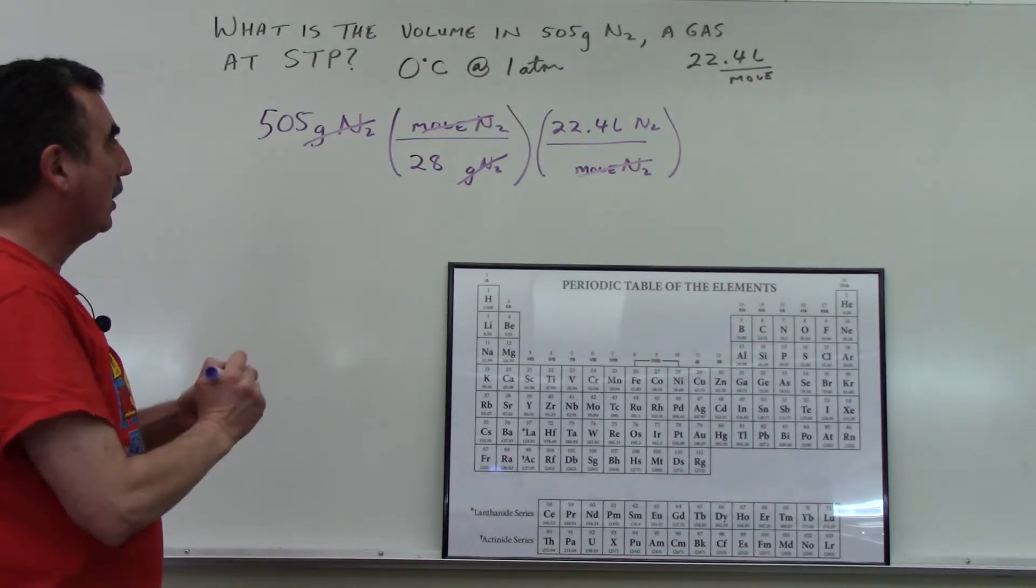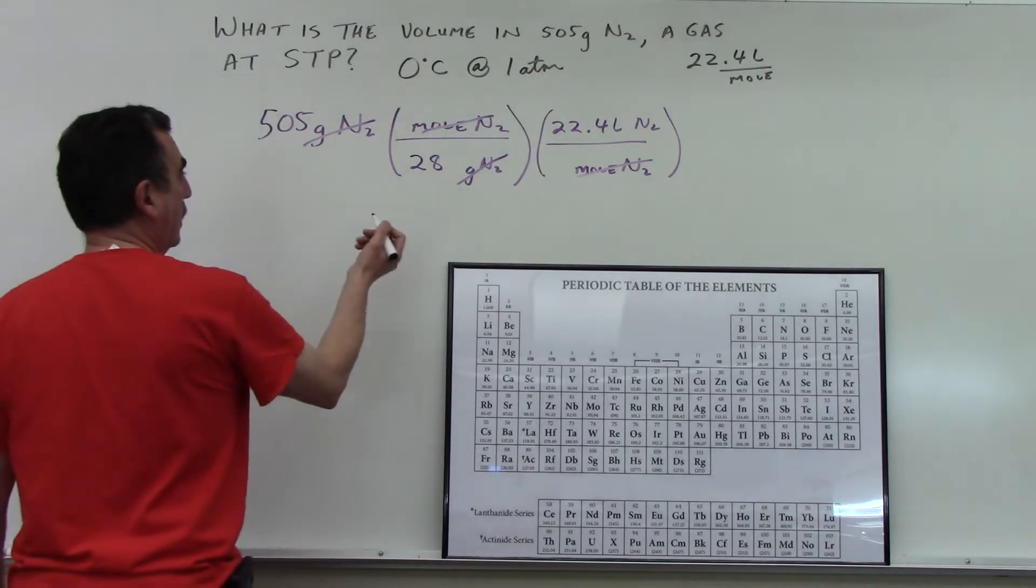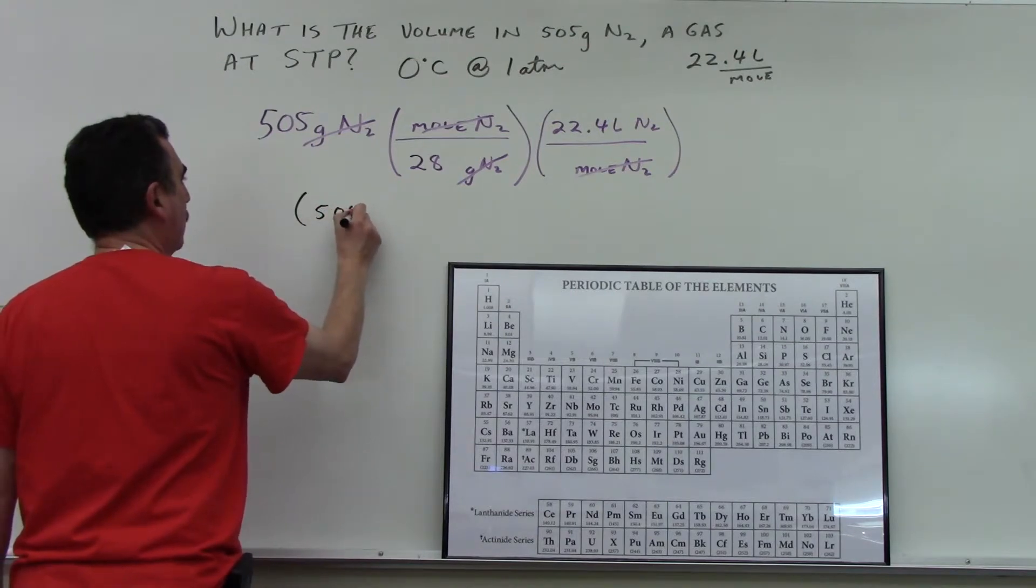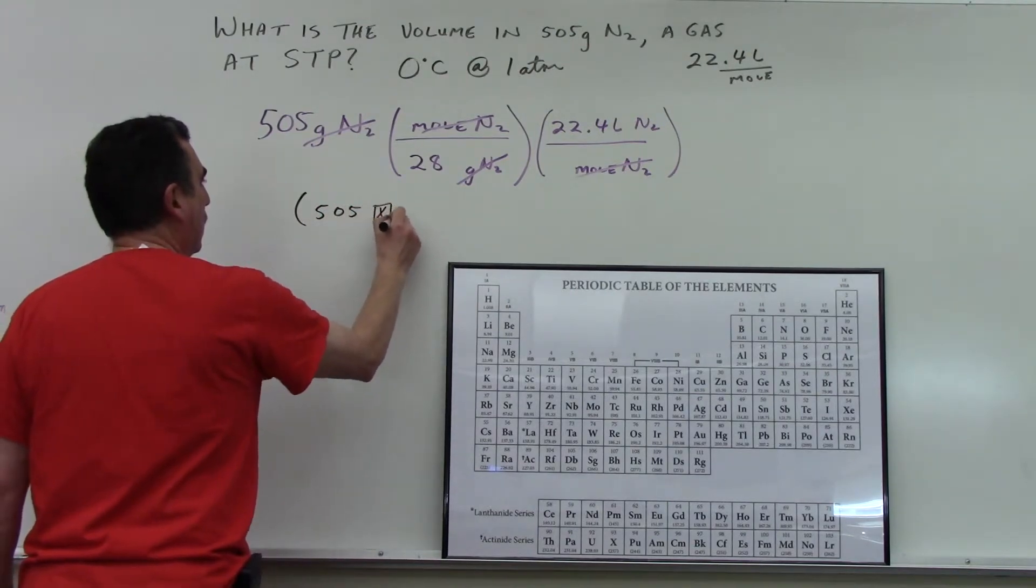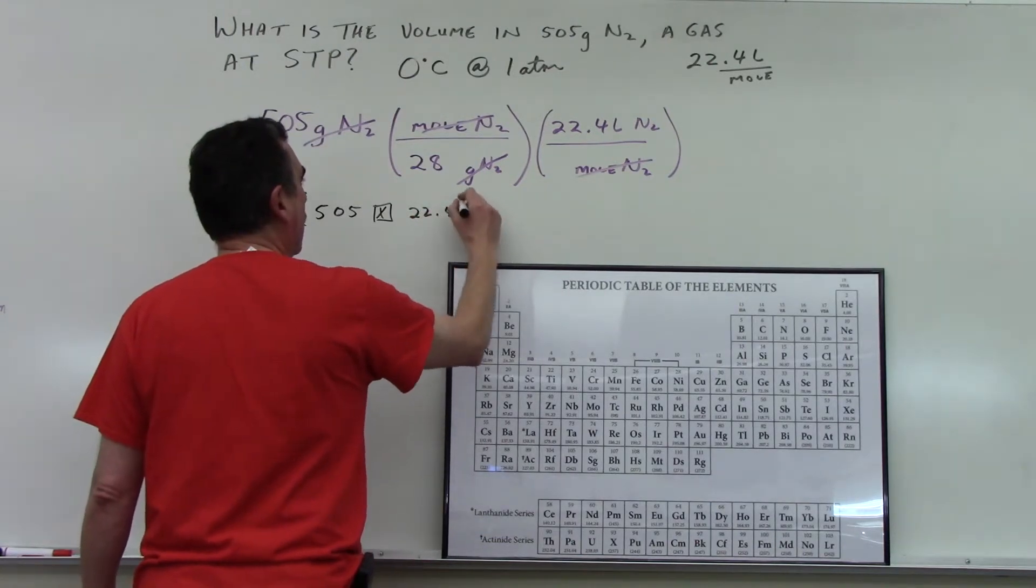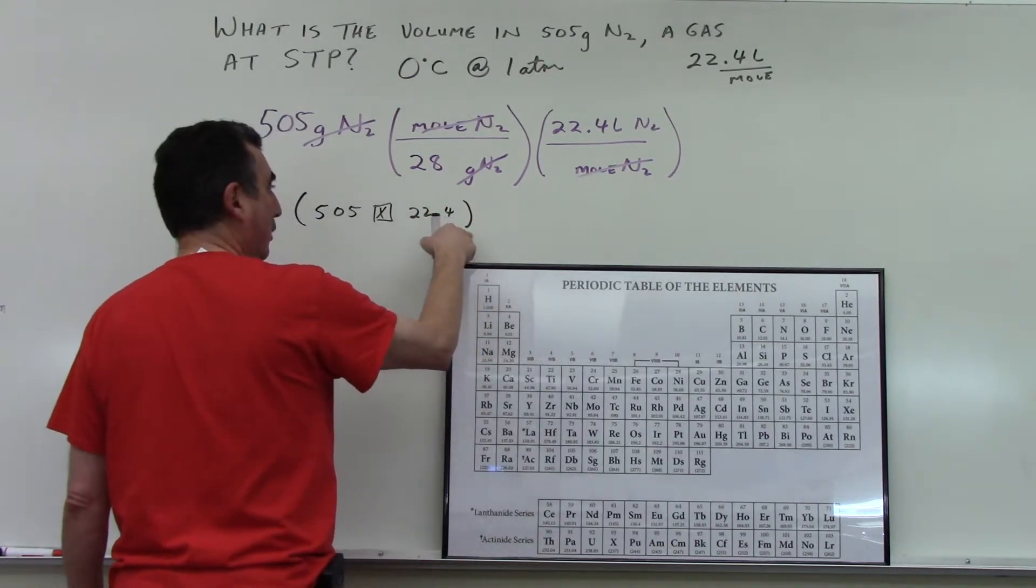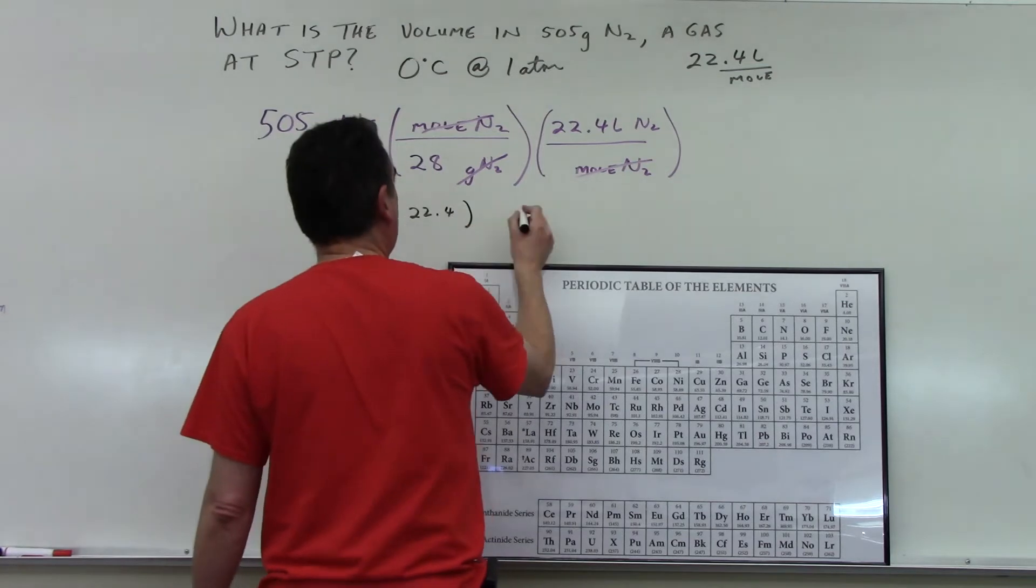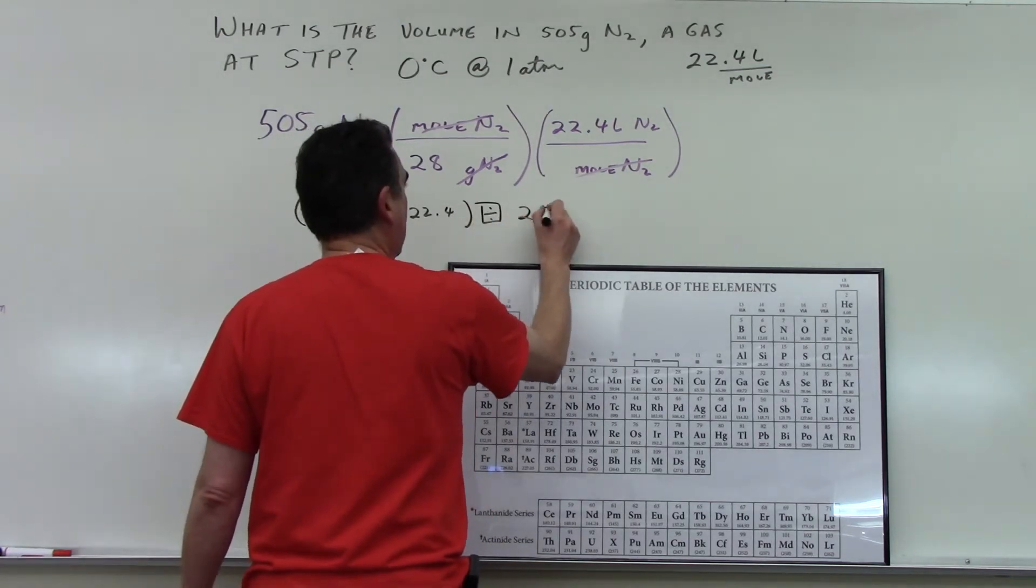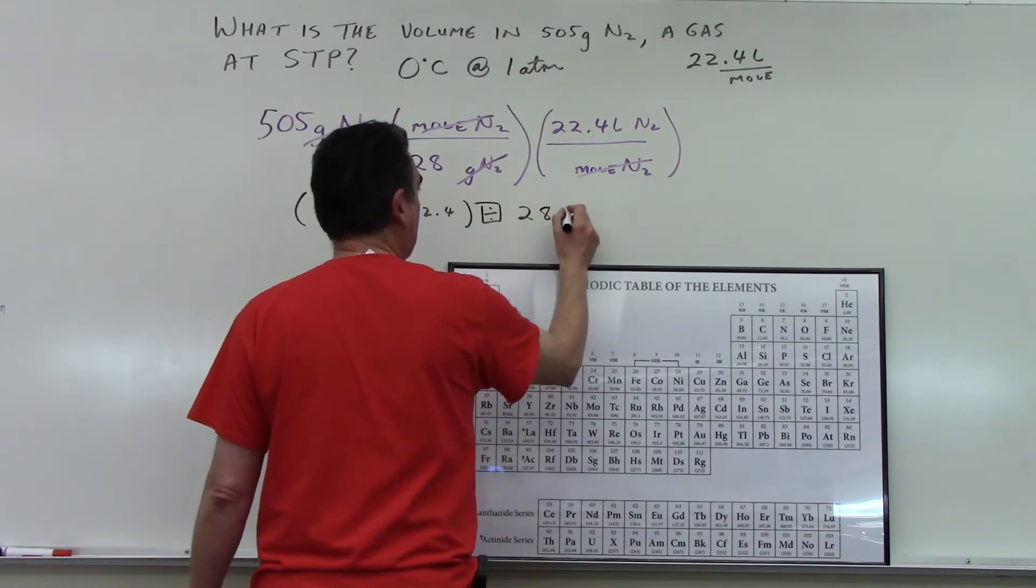Putting this into our calculator, this is how I would do it. Hit parenthesis, 505 times 22.4, close parenthesis, so hit the parenthesis button, that closes, divide key, by 28.